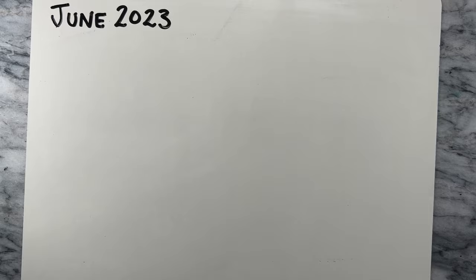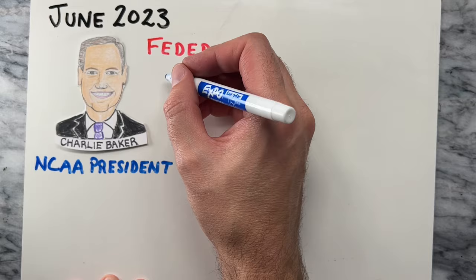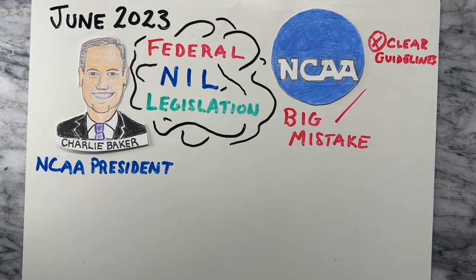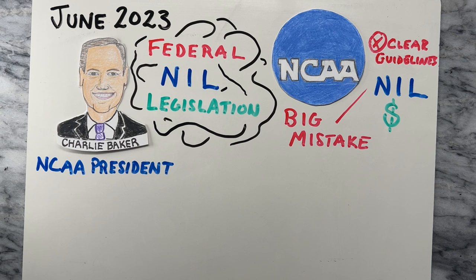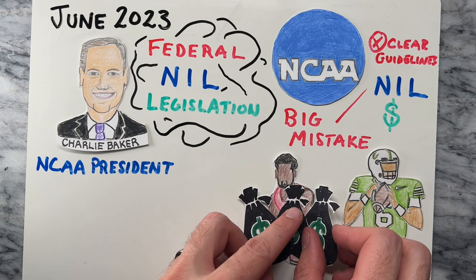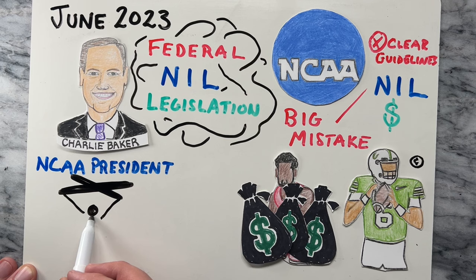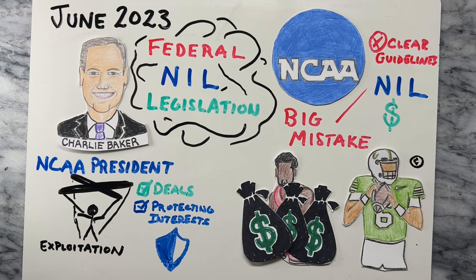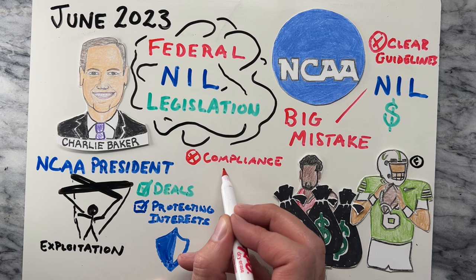Despite all of the new opportunities NIL has created, in June 2023, NCAA President Charlie Baker issued concerns surrounding the lack of framework within federal NIL legislation. He criticized the NCAA for making a big mistake in not implementing clear guidelines for athletes to monetize their own names, images, and likenesses. Baker argued that without proper guidelines, some student-athletes may receive lucrative deals while others might struggle to secure fair compensation. Additionally, the lack of regulation might open doors for potential exploitation of student-athletes, and the absence of a standardized approach may create compliance issues and could potentially lead to violations of amateurism rules, putting the eligibility of student-athletes at risk.